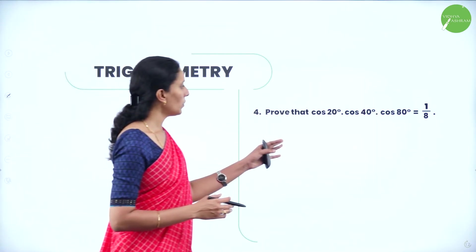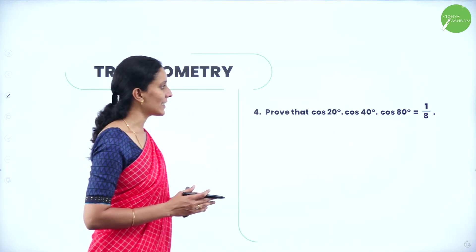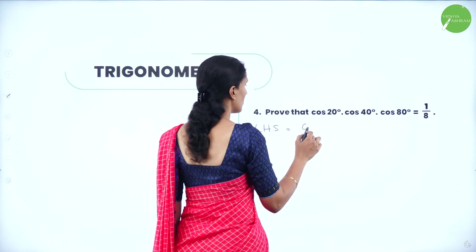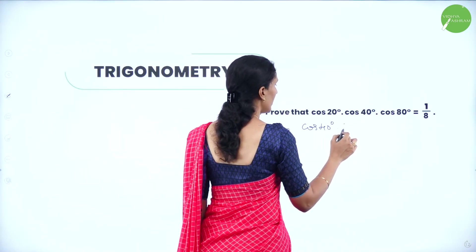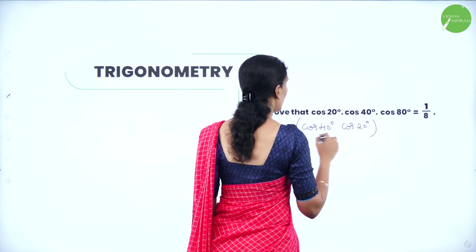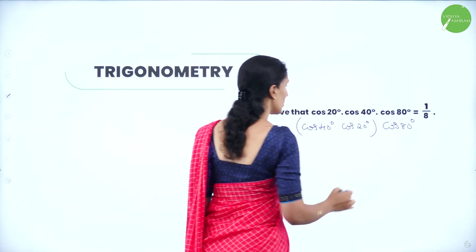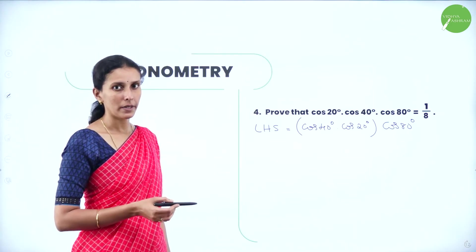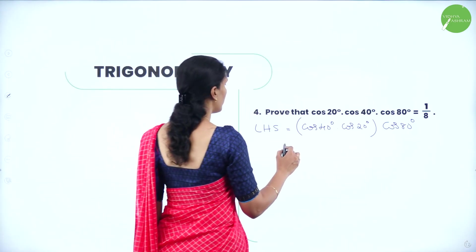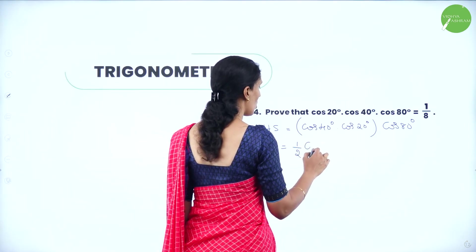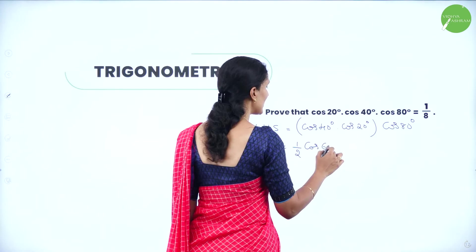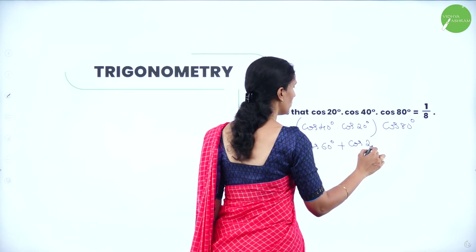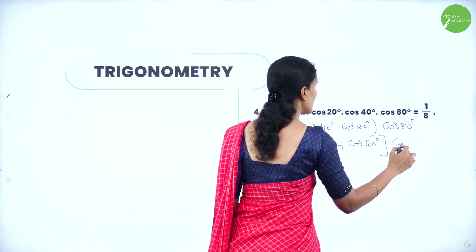Next question: prove that cos20°·cos40°·cos80° = 1/8. Rearrange the LHS as cos40°·cos20°·cos80°. Apply the transformation formula for cos40°·cos20°, which is in the form cosA·cosB: ½[cos(A+B) + cos(A−B)] = ½[cos60° + cos20°].